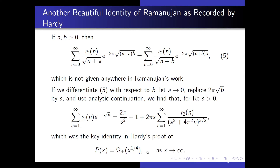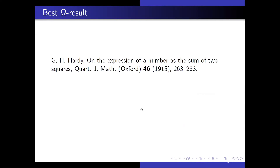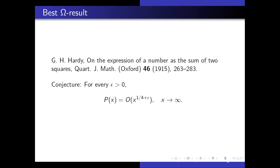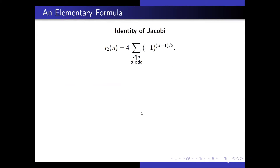Hardy had another proof of this identity as well, giving two proofs in the paper. The conjecture is that Hardy's result is actually the closest to the actual order of the error term; most mathematicians believe the error term is O(X^{1/4 + ε}) for every ε > 0.